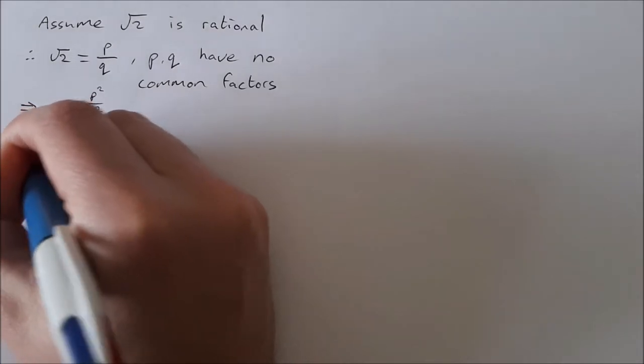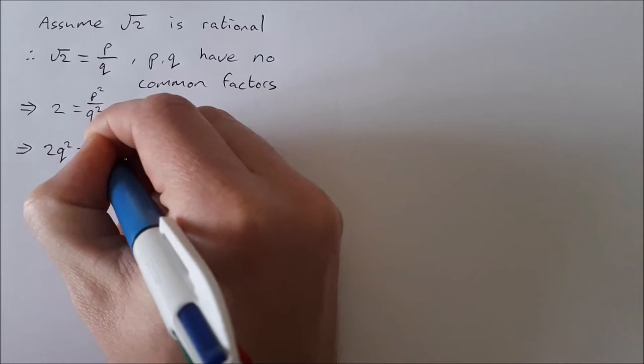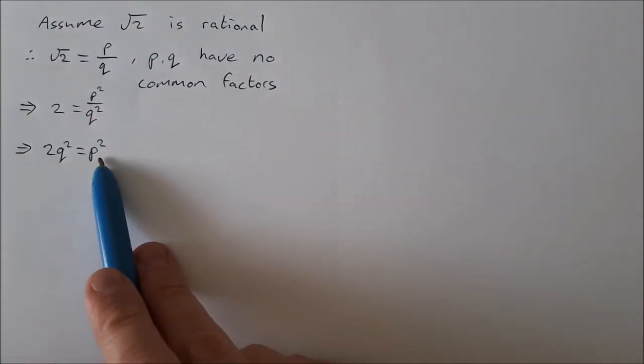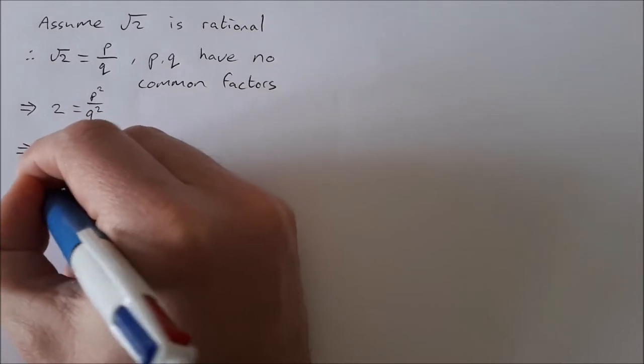Working through just a bit of algebra, isolating or getting rid of the fraction, this implies that 2q squared is equal to p squared. What this means is p squared is an even number because p squared can be written as 2 times some other number.